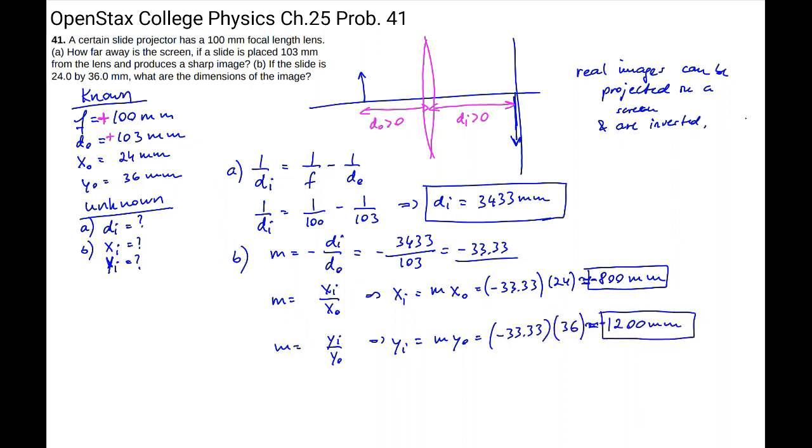So the negative signs here basically tell us that the image is inverted. So it's flipped left to right, and it is also upside down. That's what the negative signs stand for. So this is a fairly straightforward lens problem.